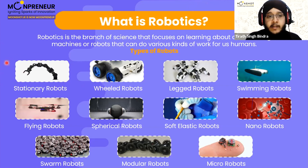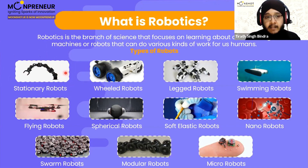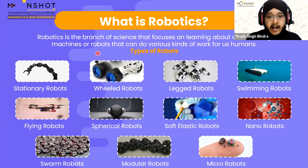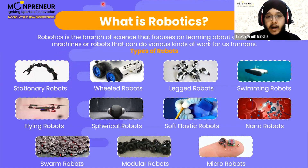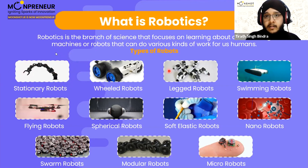Let's discuss the types of robots. The first is a stationary robot. When we talk about robots, we don't only mean machines that move — a robot is simply a machine that can do a task done by humans. A factory robot doesn't need to move; a conveyor belt brings everything to it, and it performs operations like welding, cutting, or joining parts. Such robots rotate on their axis and are called stationary robots.